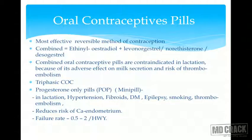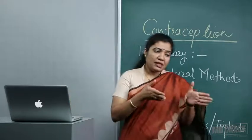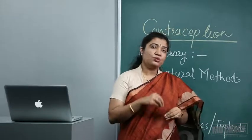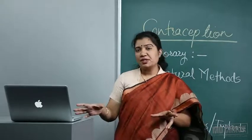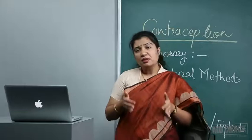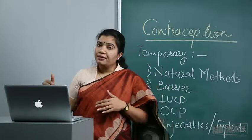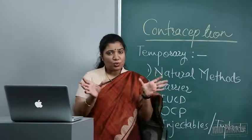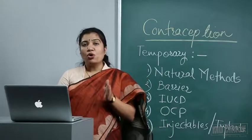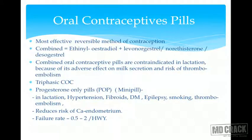Triphasic COC: the pills are formulated so that almost physiological doses of hormones are released over three phases. In the first seven days, estrogen is slightly higher and progesterone is less; in the middle seven days, the doses vary; in the last seven days, progesterone is higher than estrogen. This almost mimics physiological hormonal doses, producing effective action with reduced side effects.